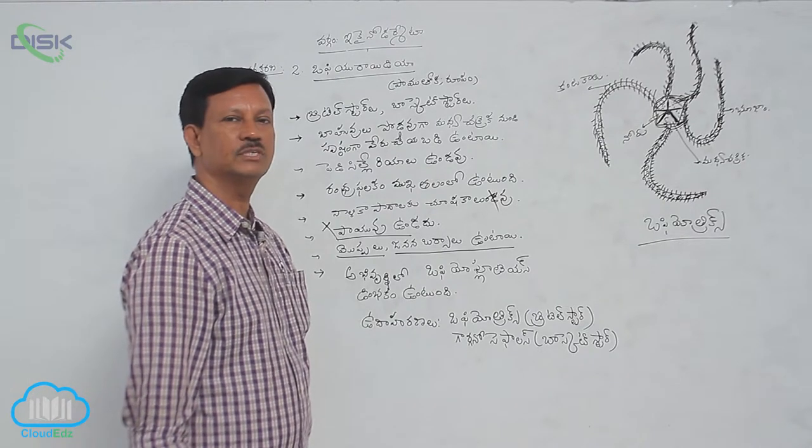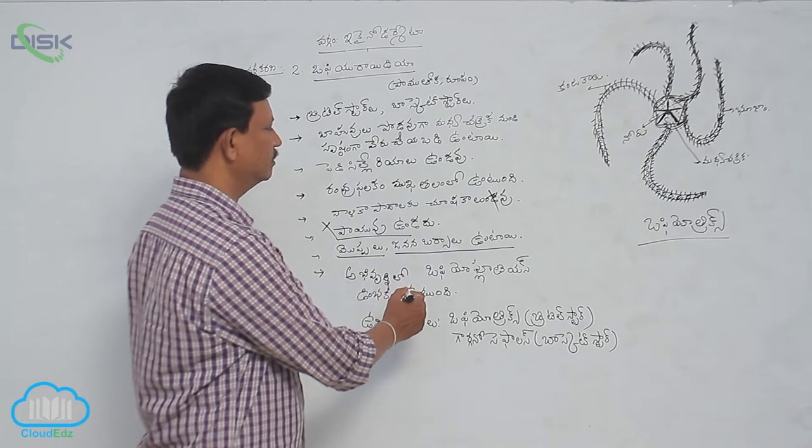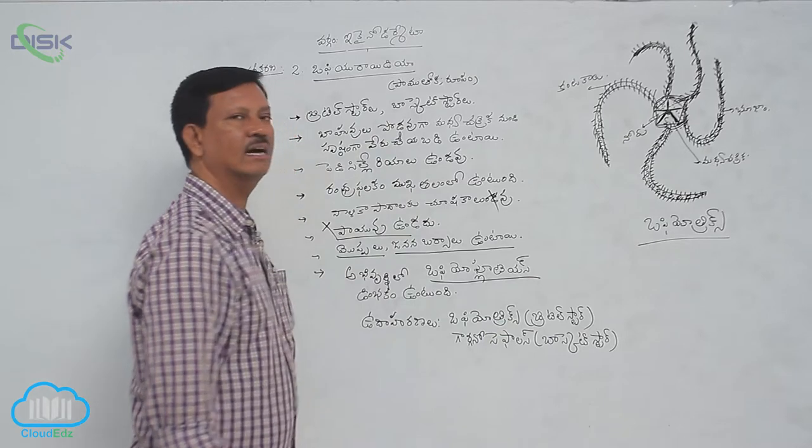They have larvae stages. The larva is called the Ophiopluteus larvae.